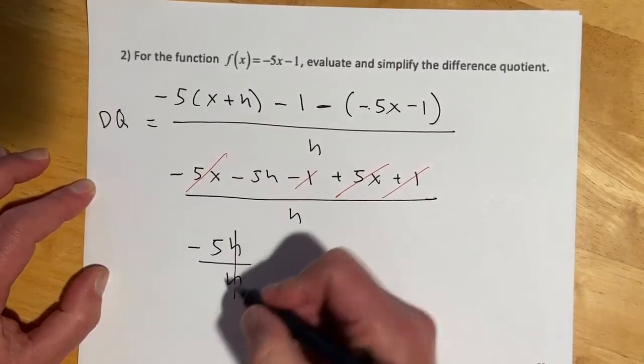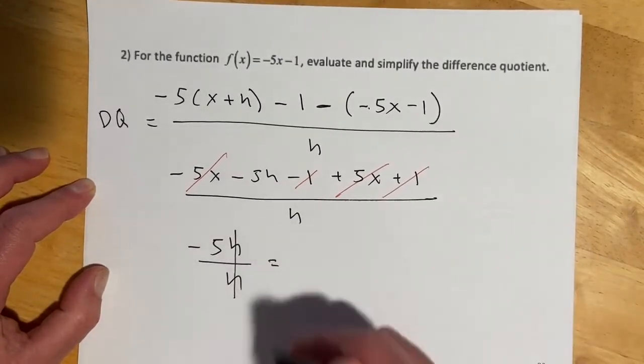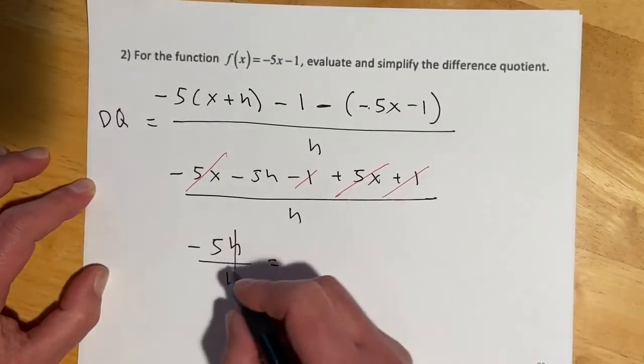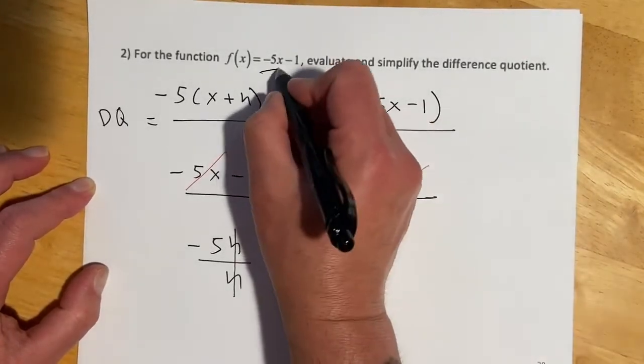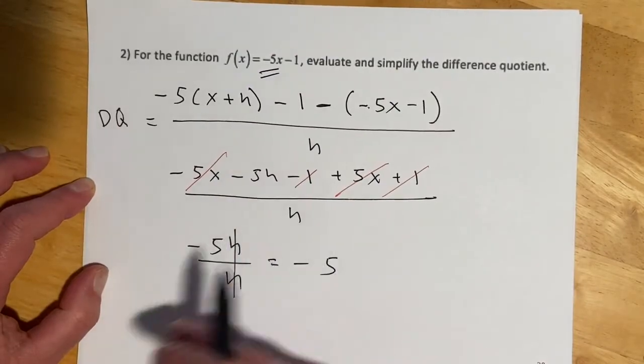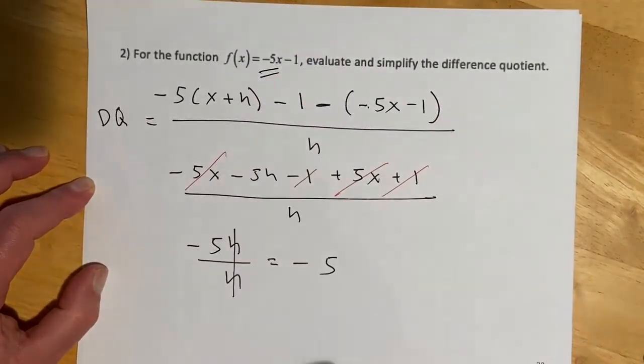And then if we look at what's left, it's minus 5h over h. h over h is 1 for all values other than 0. And that was a thing in the difference quotient. h can't be 0 until it's a limit. And that gets us to negative 5. And what should it be? It should be negative 5, right? Because our slope was negative 5. So we just took the longest road ever to say, yeah, slope's negative 5.